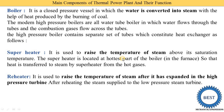The reheater is used to raise the temperature of steam after its expansion in the high-pressure turbine. After reheating, the steam is supplied to the low-pressure steam turbine. In a steam turbine there are three regions: high pressure, intermediate pressure, and low pressure. After the high-pressure region, we reheat the steam again — that's why it is called the reheater — and then it is supplied to the low-pressure or intermediate-pressure steam turbines.